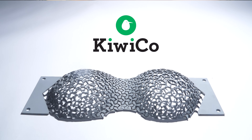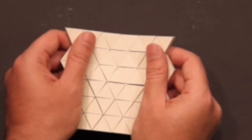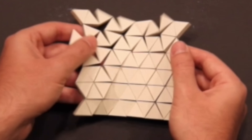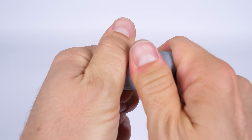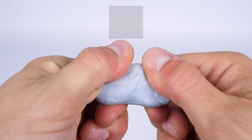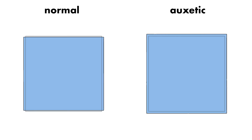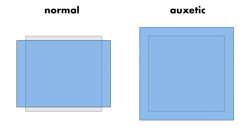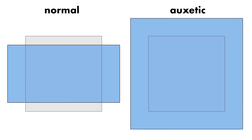Let's pick that name apart: bi-stable auxetic. You may have come across auxetic materials. Auxetic materials are materials that behave in a weird way when stretched or squished. Blu-Tac, for example, isn't auxetic. If you stretch Blu-Tac in one direction, it gets thinner in the other direction. That's quite normal behavior. Auxetic materials do the opposite — when you stretch an auxetic material in one direction, it gets wider in the other direction as well.